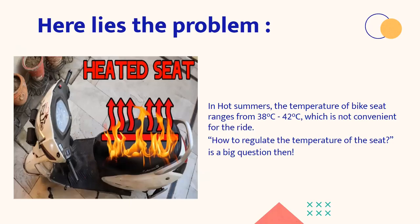The problem lies in the seats. The problem lies in traveling in the hot summers through two-wheelers or bikes or motorcycles or other vehicles. In hot summers, the temperature of bike seat ranges from 38 degrees to 42 degrees Celsius, which is not at all convenient for the ride. So how to regulate the temperature of seat? It is a big question now.